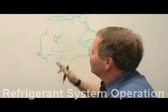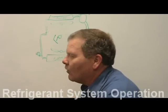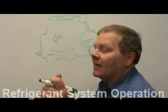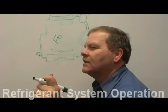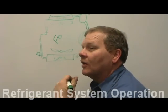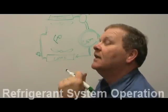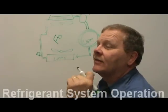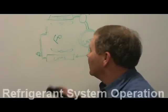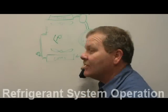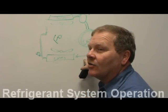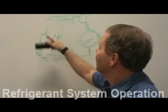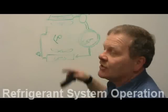This is a fixed orifice system. One of the things that will be on your final — you're going to have to explain what's in each line. This is the discharge line from the compressor to the condenser. From the condenser to the evaporator is the liquid line. And this line right here coming back is the suction line.